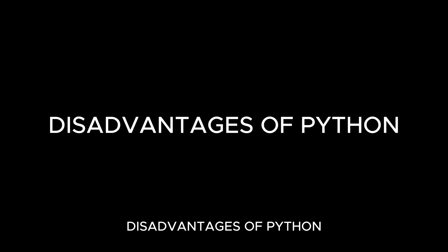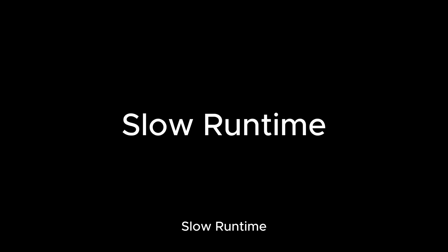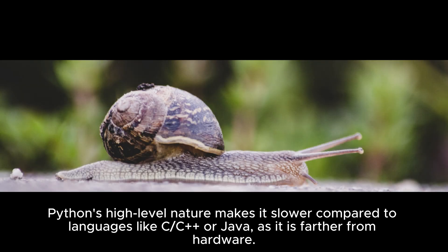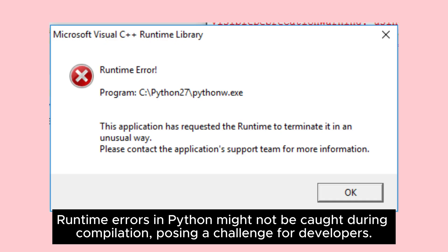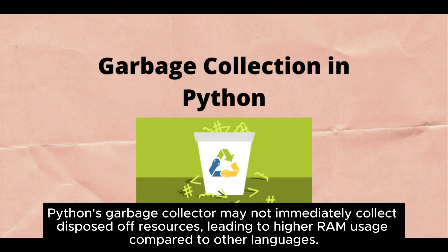Now let's look at the disadvantages of Python. Python's high-level nature makes it slower compared to languages like C, C++, or Java, as it is farther from the hardware. Runtime errors in Python might not be caught during compilation, posing a challenge for developers. Additionally, Python's garbage collector may not immediately collect disposed resources, leading to higher RAM usage compared to other languages.